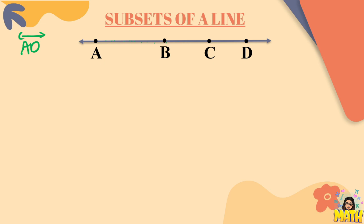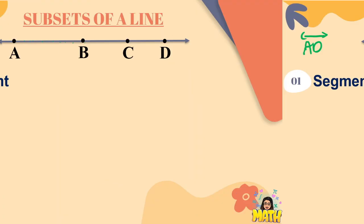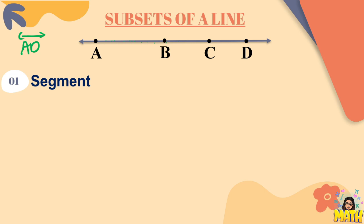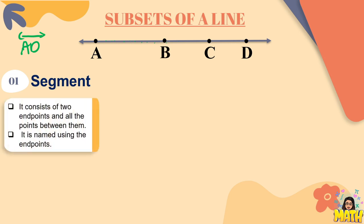So kapag sinabi nating subsets of a line, these are subgroups of a line in which we will be having additional terms. Just like the segment. Kapag sinabi nating segment consists of two endpoints and all the points between them. It is named using the endpoints.